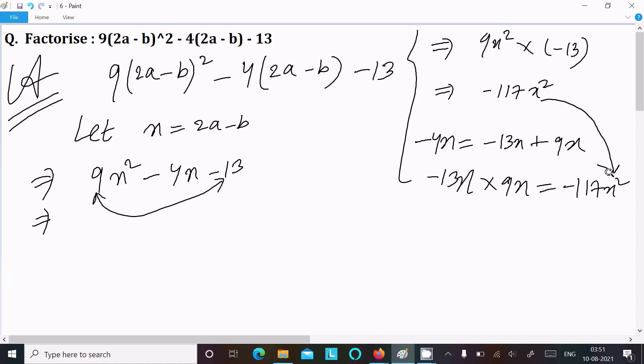Writing here 9x², in place of -4x writing -13x + 9x - 13.